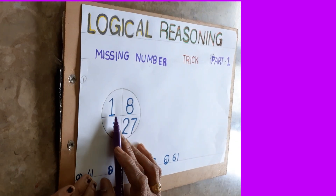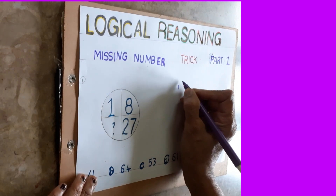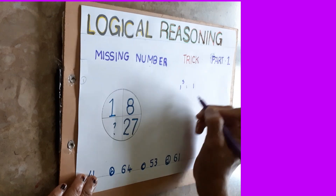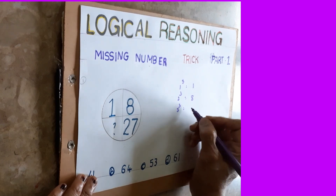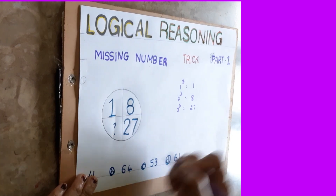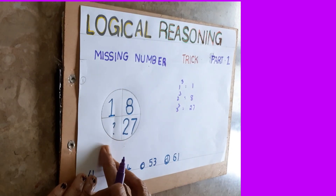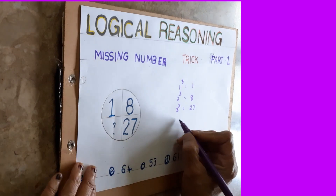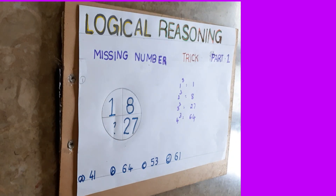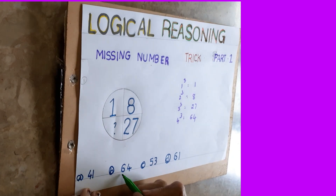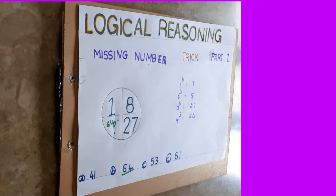See here, nothing very simple. One cube is one. Two cube is what? Two twos are four, four twos are eight. Three cube is what? Three threes are nine, nine threes are 27. So it is coming in a row: one cube, two cube, three cube. What will come next? Four cube — four fours are 16, 16 fours are 64. The correct answer is option B: 64. That is the way you have to do this one.